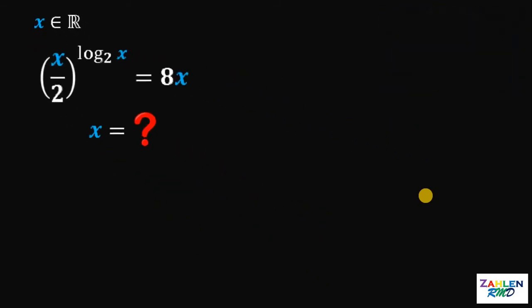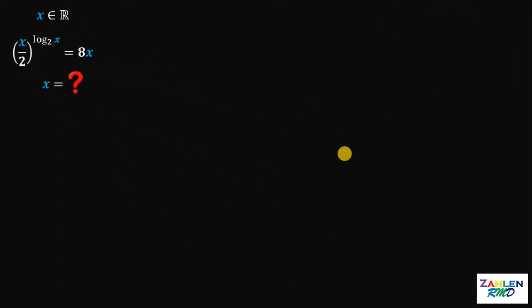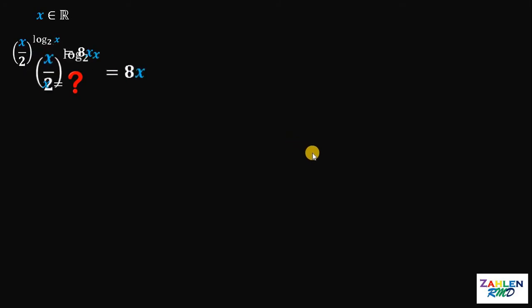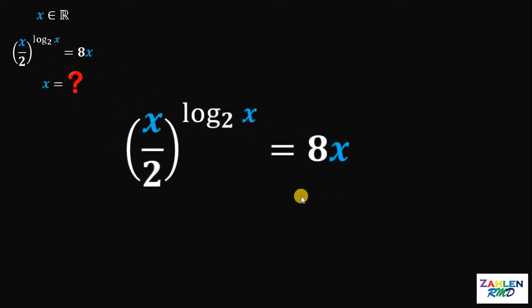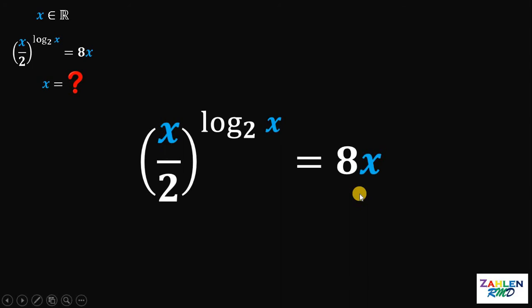Let's answer this question together. Our goal is to solve for the value of x, where x is a real number. We have x over 2 raised to logarithm of x to the base of 2, equals 8x. To answer this question, we will use laws of exponents and properties of logarithm.